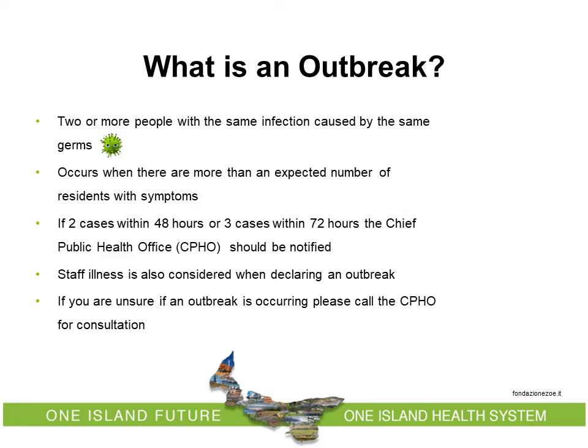What is an outbreak? An outbreak is defined as 2 or more people with the same infection caused by the same germs. An outbreak occurs when there is more than the expected number of residents with gastrointestinal symptoms. If 2 cases occur within 48 hours or 3 cases within 72 hours, the Chief of Public Health Office should be notified. Staff illness is also considered when declaring an outbreak. If unsure whether an outbreak is occurring, call the Chief of Public Health Office for consultation.